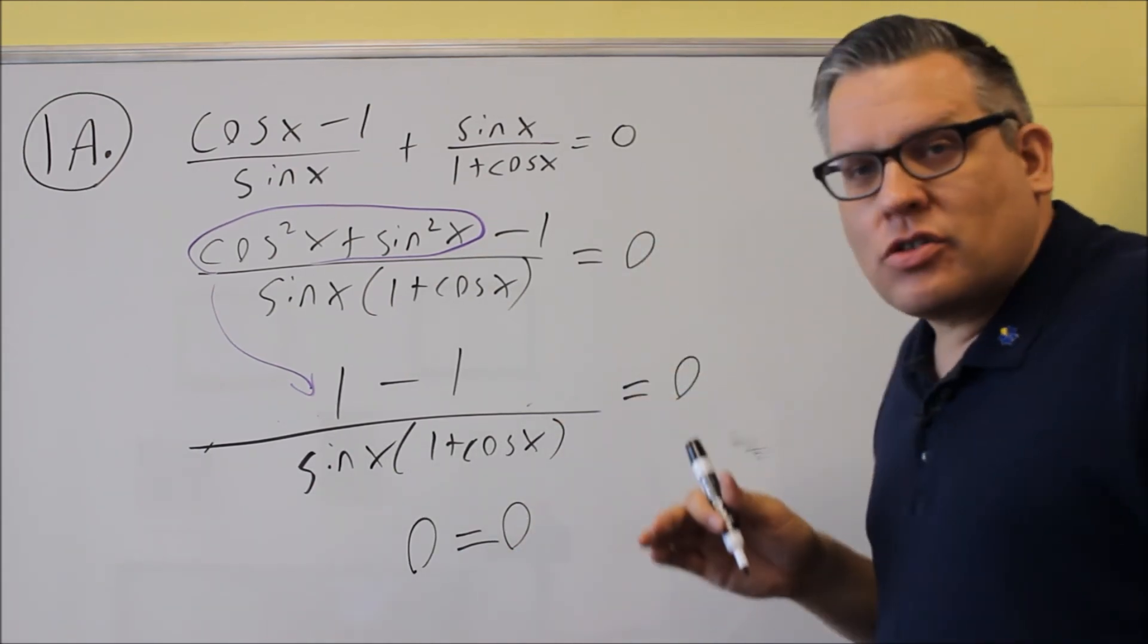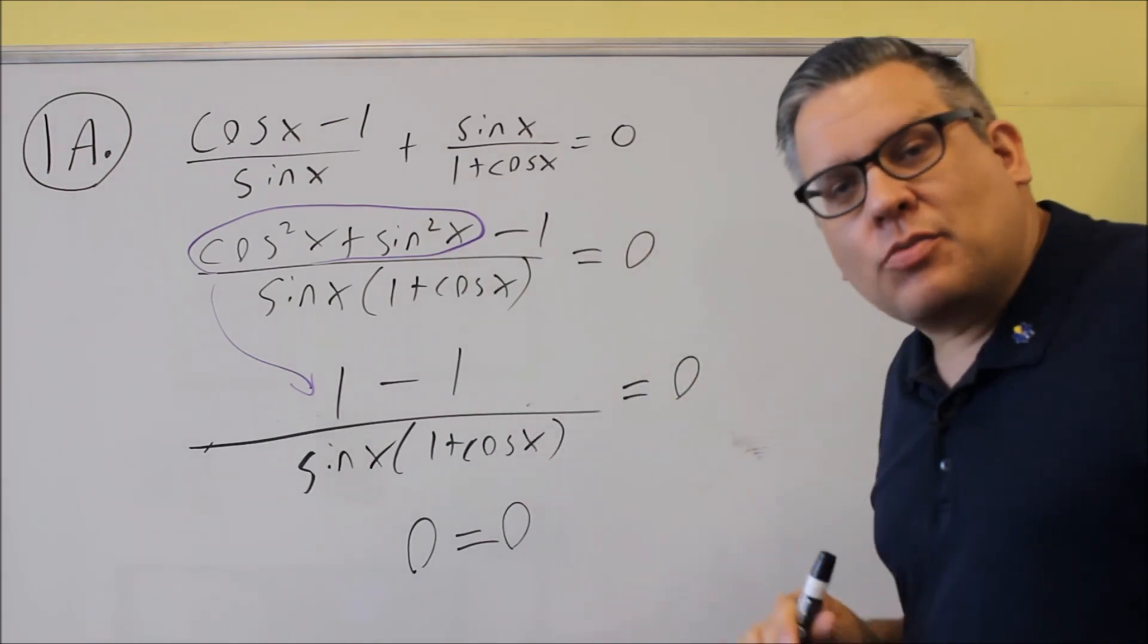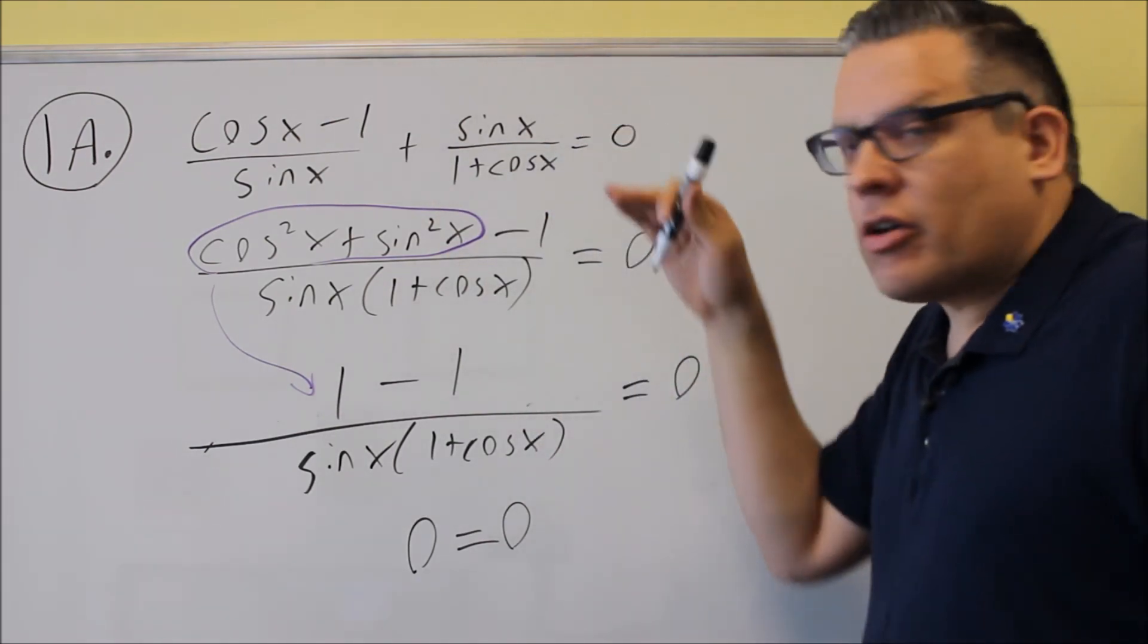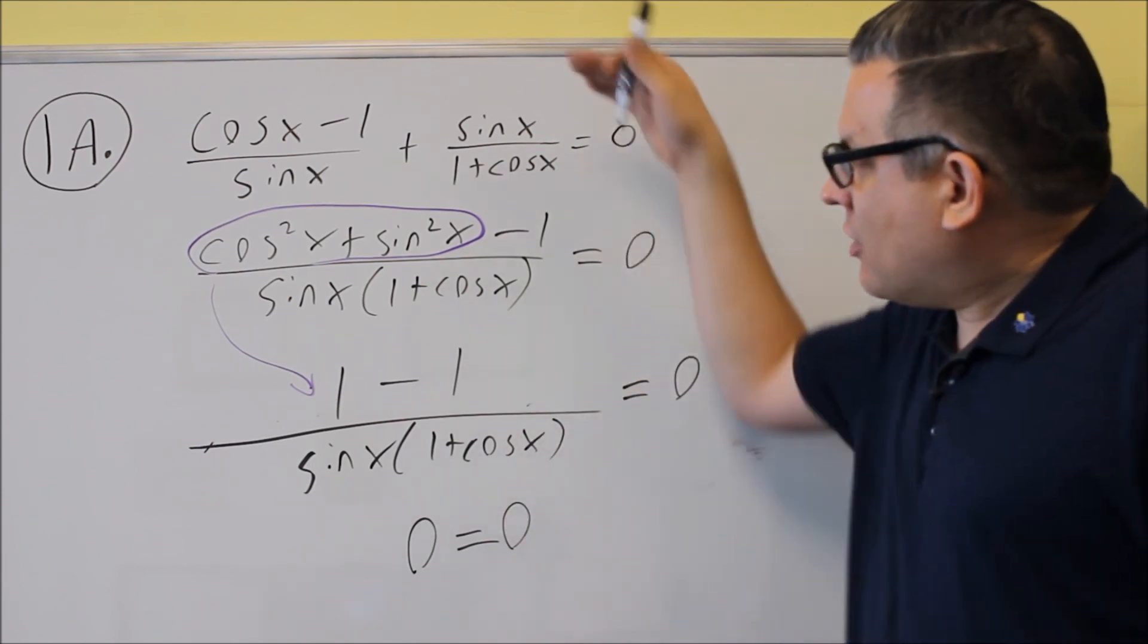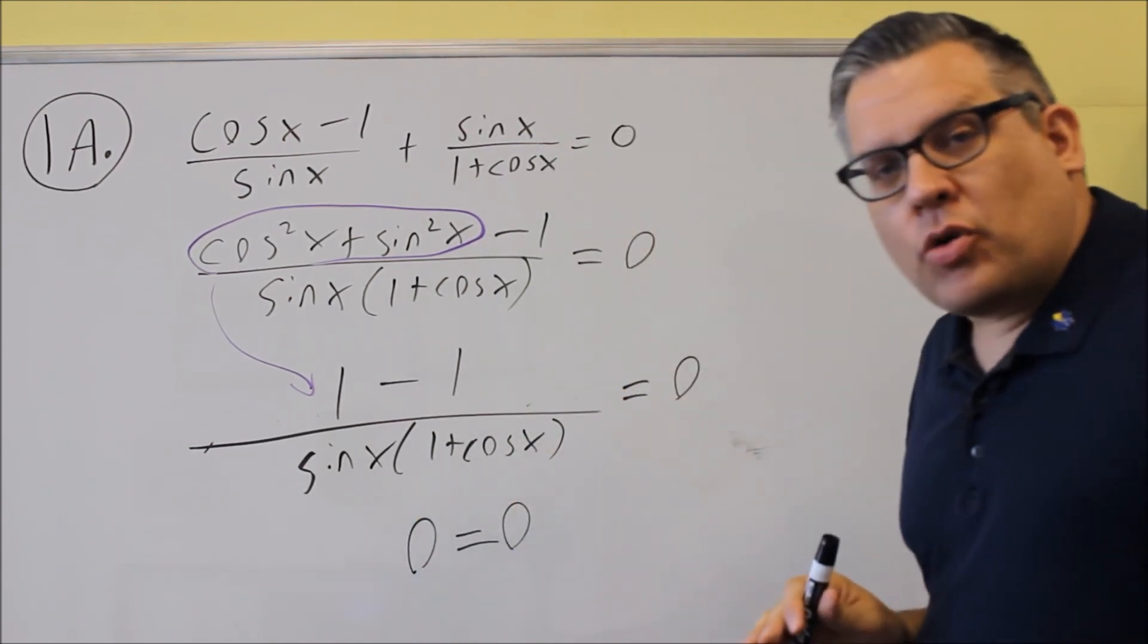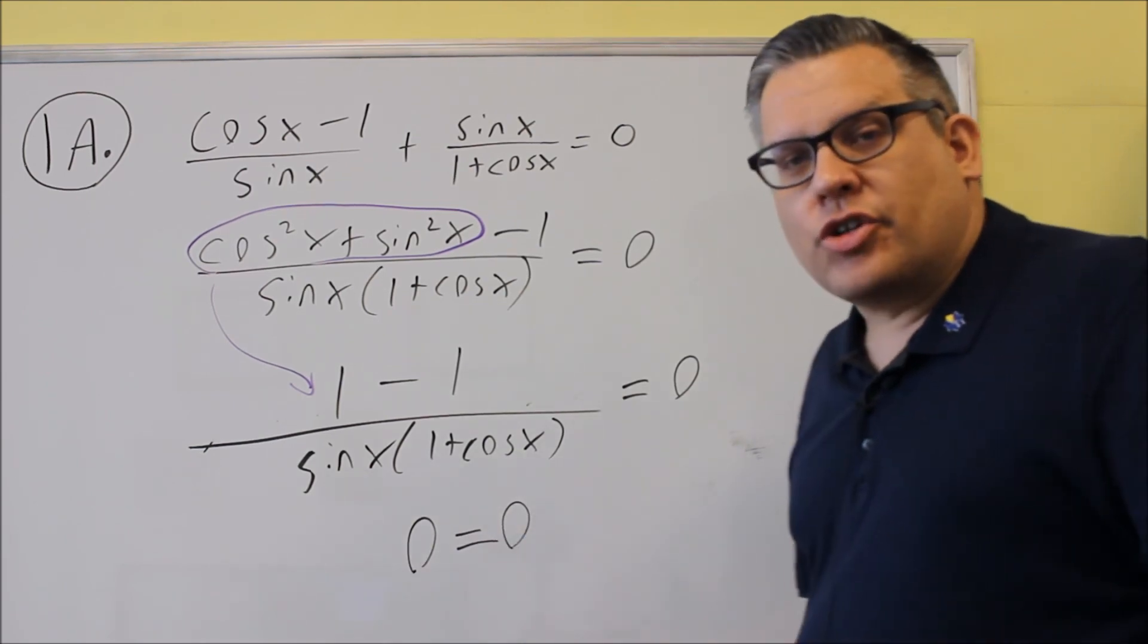So again, these type of identities, you should always get one side, both sides to be equal to each other. They're always going to start out. Eventually you should prove that they are an identity. And so because you're establishing an identity, you should always get both sides equal. So in this case we get 0 equals 0.